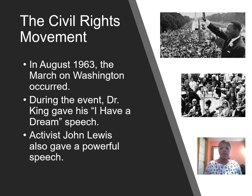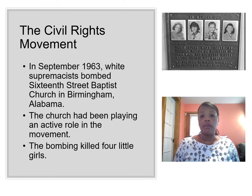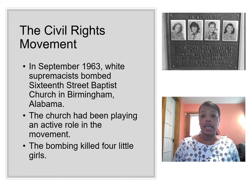In August 1963, the March on Washington occurred, and it was during this event that Dr. Martin Luther King gave his famous I Have a Dream speech. Young activist John Lewis also spoke at the event and gave a powerful speech too. Only a few weeks later, in September of 1963, white supremacists bombed 16th Street Baptist Church in Birmingham, Alabama. This church had been playing an active role in the movement, and that is why it was targeted. The bombing tragically killed four little girls: Denise McNair, Cynthia Wesley, Addie Mae Collins, and Carol Robertson.